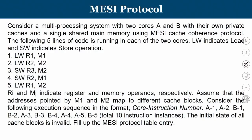Here is the first question. Consider a multiprocessing system with two cores — for simplicity, two cores A and B — with their own private caches and a single shared main memory, using a MESI cache coherence protocol. There are five lines of code running in each of the two cores. LW indicates a load operation and SW indicates a store operation, where RI and MJ indicate register and memory operands respectively. Assume that the addresses pointed by M1 and M2 map to different cache blocks.